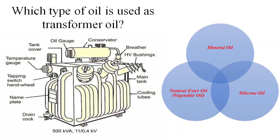The most common type of oil used as transformer oil is mineral oil. Mineral oil is a refined petroleum-based oil that has been treated to meet specific electrical and performance requirements for transformer applications. It is highly refined to remove impurities and contaminants that could affect its insulating properties.